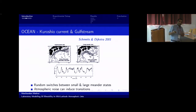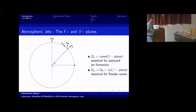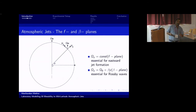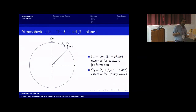We are also trying to put these results in the context of theories based on statistical mechanics that my collaborators work on. I will give a brief overview of the essential mechanisms for the formation of atmospheric jets and the possibility of bistability. One always comes across the f-plane and beta-plane approximations — I will quickly explain what they are.